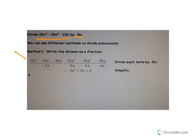What we're going to do is break it down as a fraction. We're going to rewrite it all over negative 5x and then simplify. We break it down into three separate fractions: 15x cubed divided by negative 5x equals negative 3x squared; negative 10x squared divided by negative 5x gives us 2x; and negative 20x divided by negative 5x gives us 4.